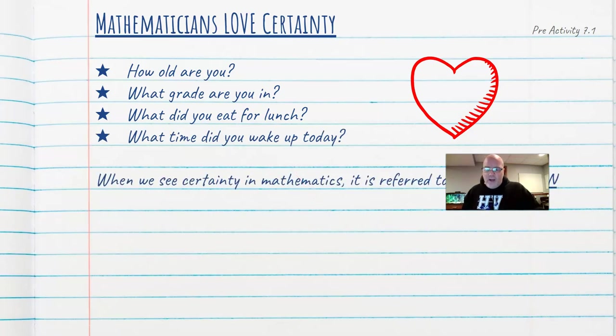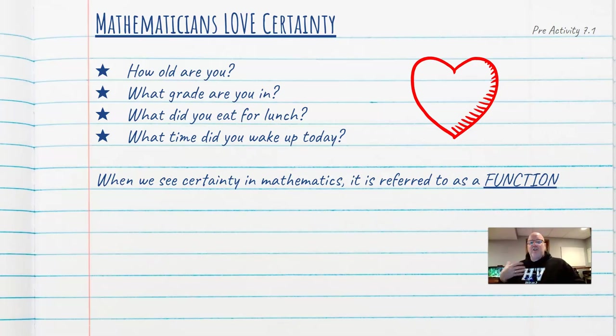So when we have these relationships that show certainty, we call these functions. And I want you to write that down somewhere. Functions imply certainty. Certainty and certainty implies a function.